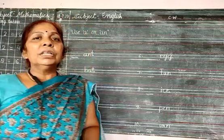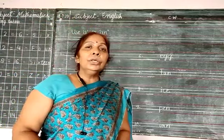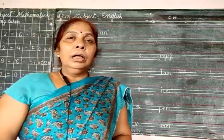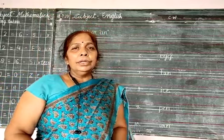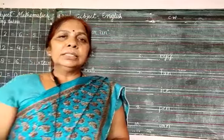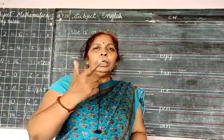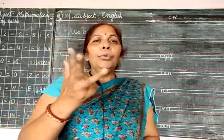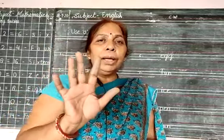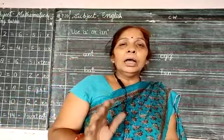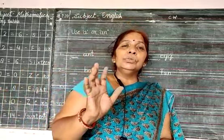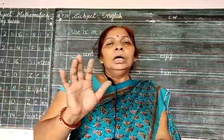First you understand where you use A or AN. In English you know there are 5 vowels: A, E, I, O, U. In English there are 5 vowels and the others are consonants. So first you learn the vowels.